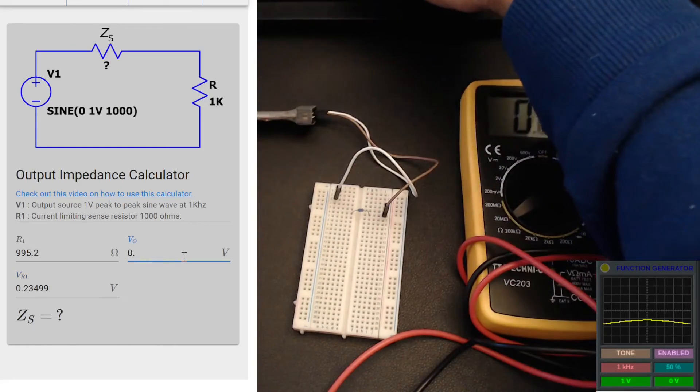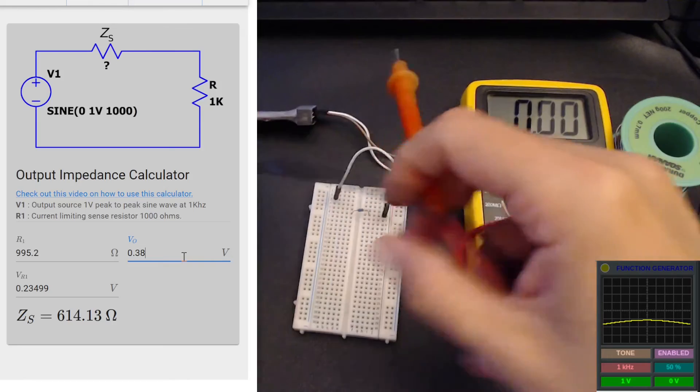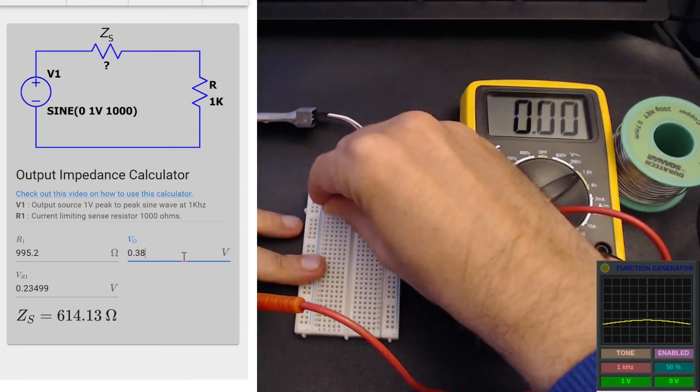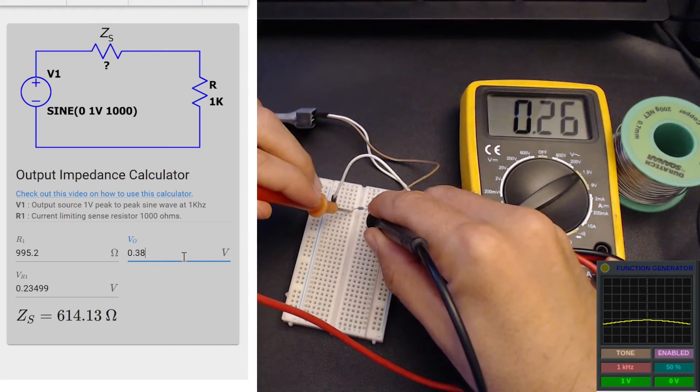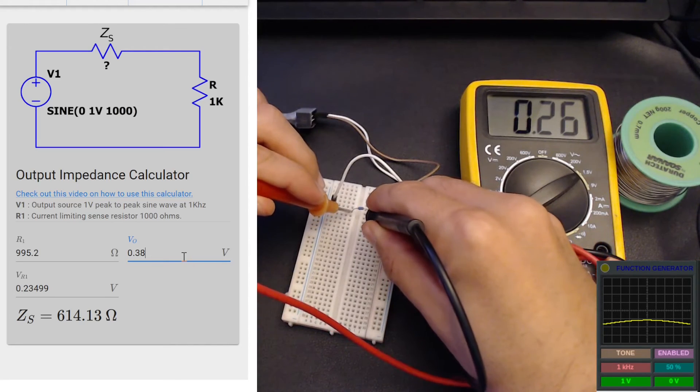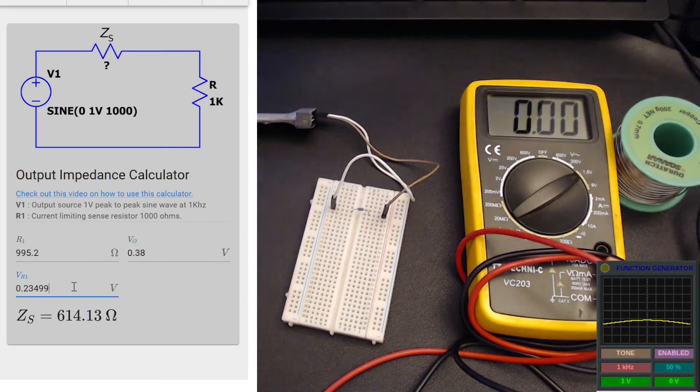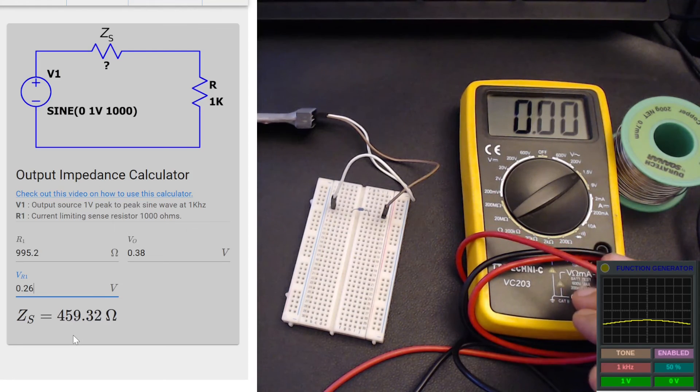Now I want to repeat the same measurement when the signal generator is under load. We're looking at 0.26 volts.